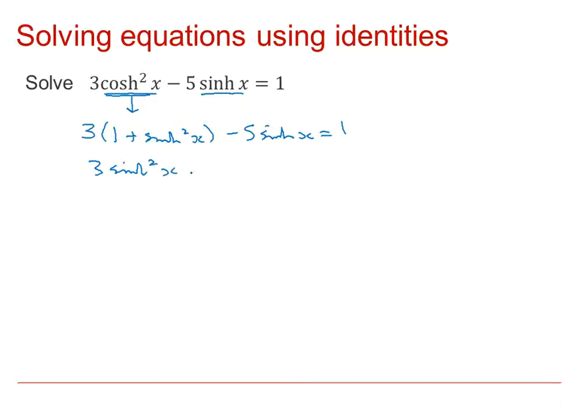And with a bit of rearranging we can get a quadratic in sinh x. So we've got 3 sinh squared x minus 5 sinh x plus 2 is 0. And this particular one will factorize so we've got 3 sinh x minus 2 times sinh x minus 1.